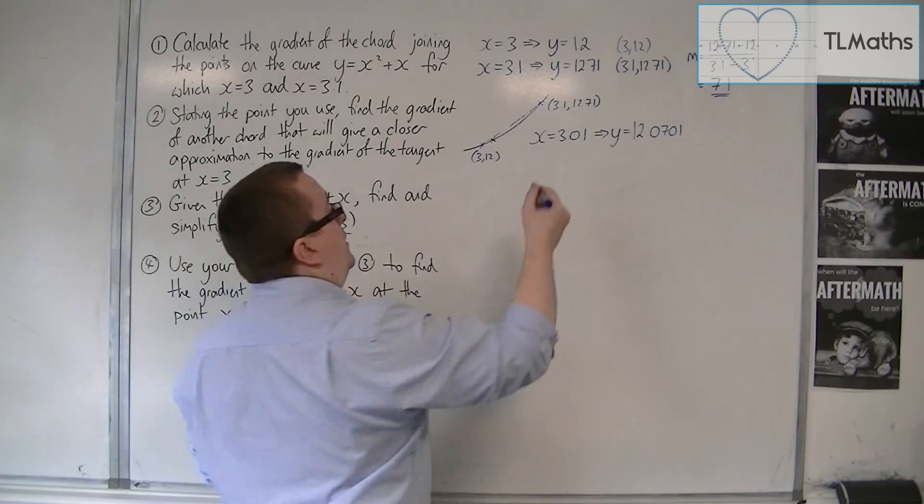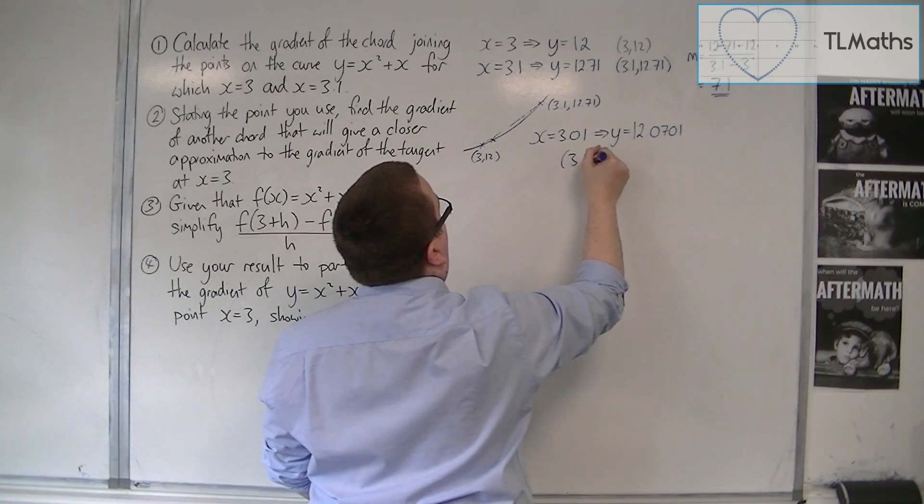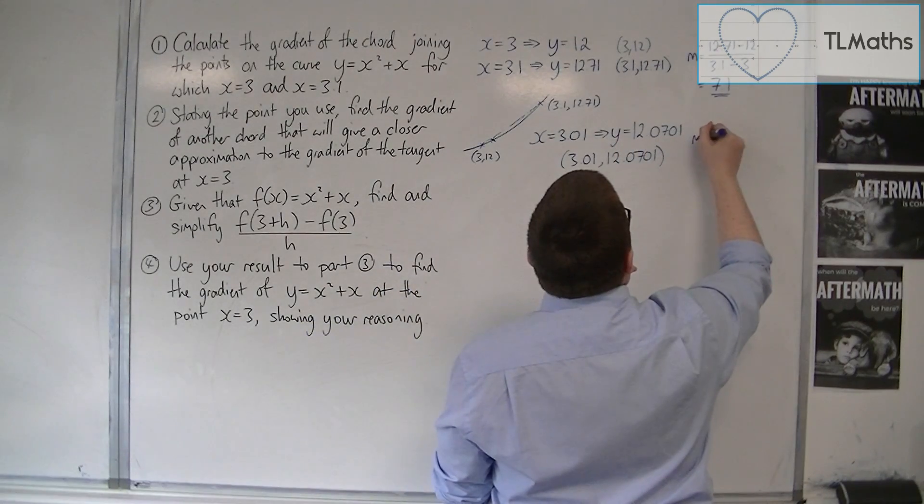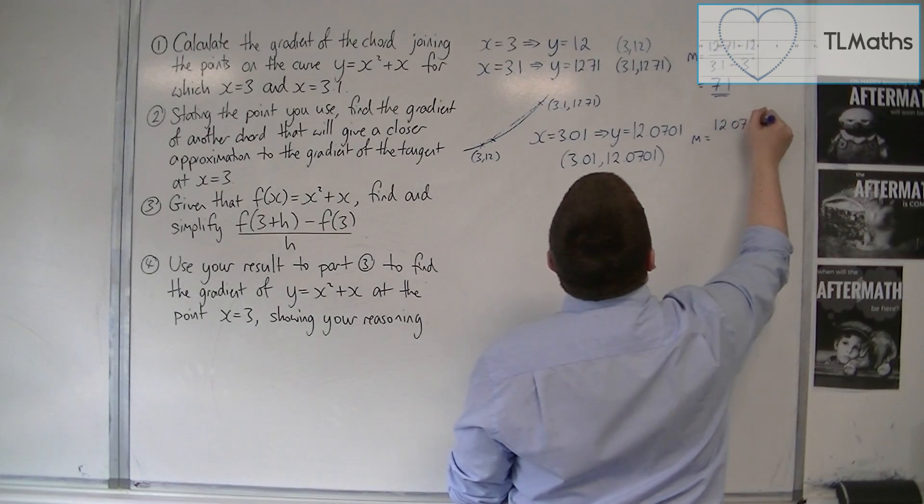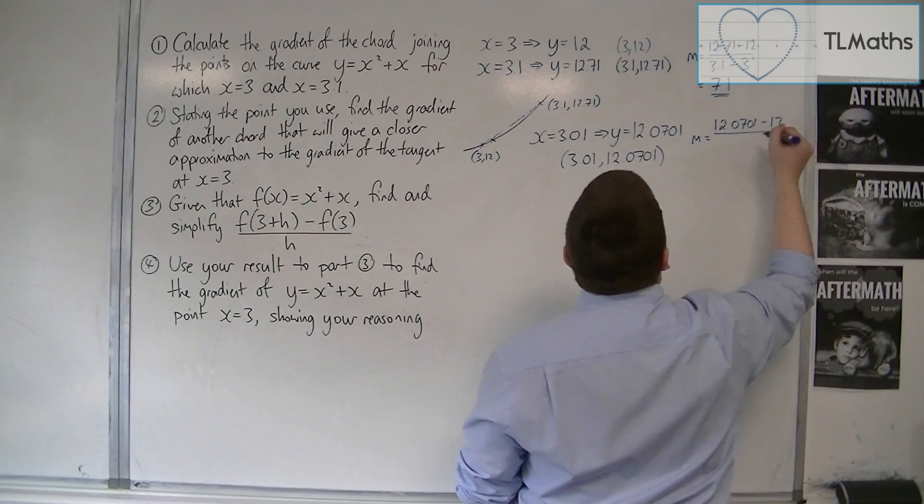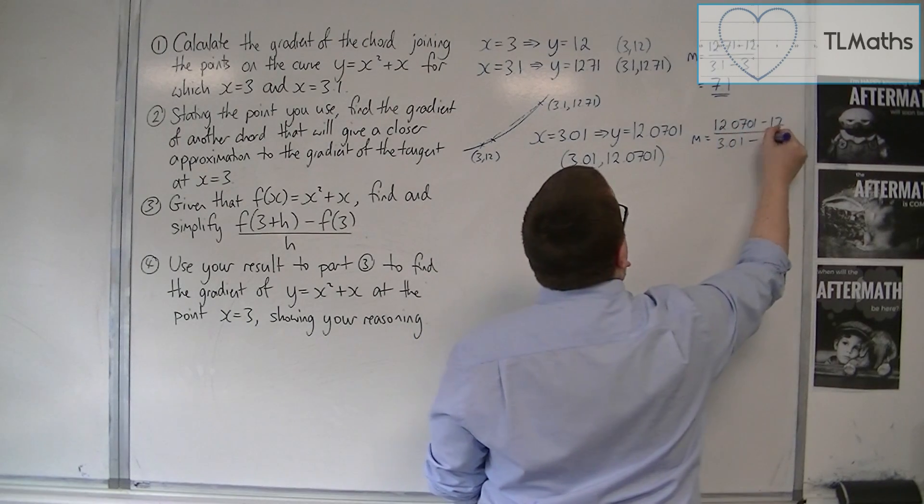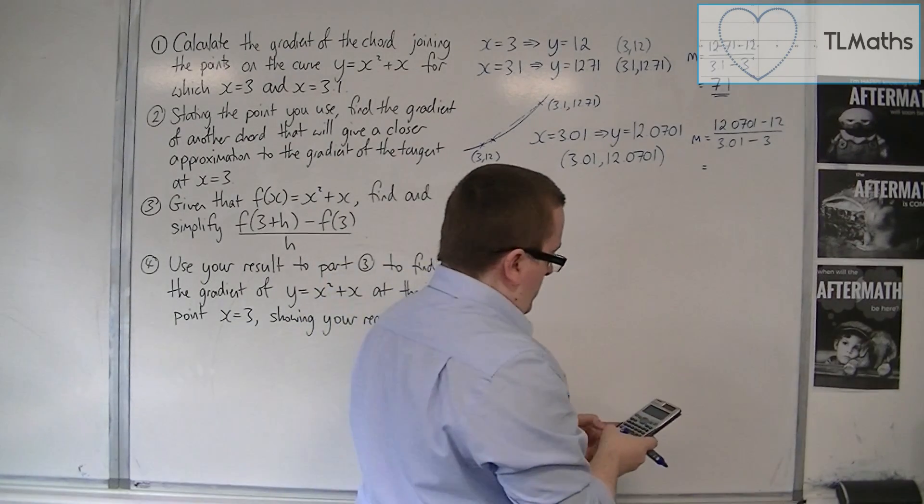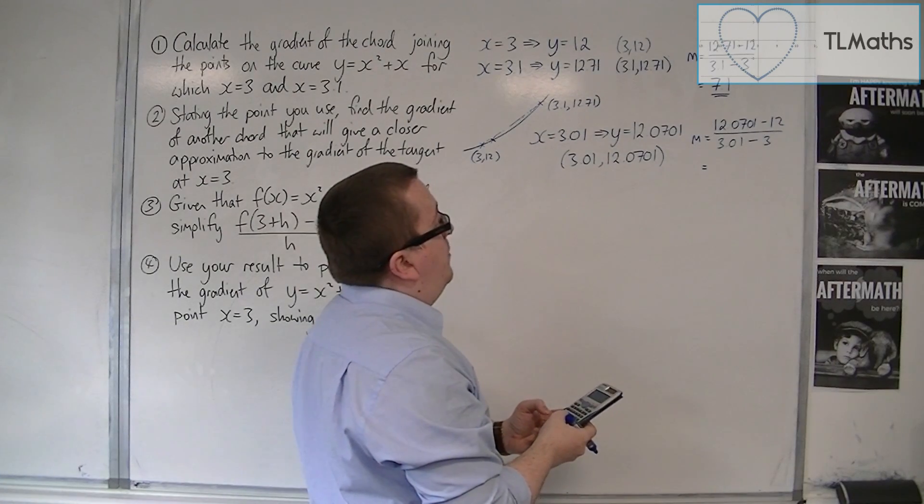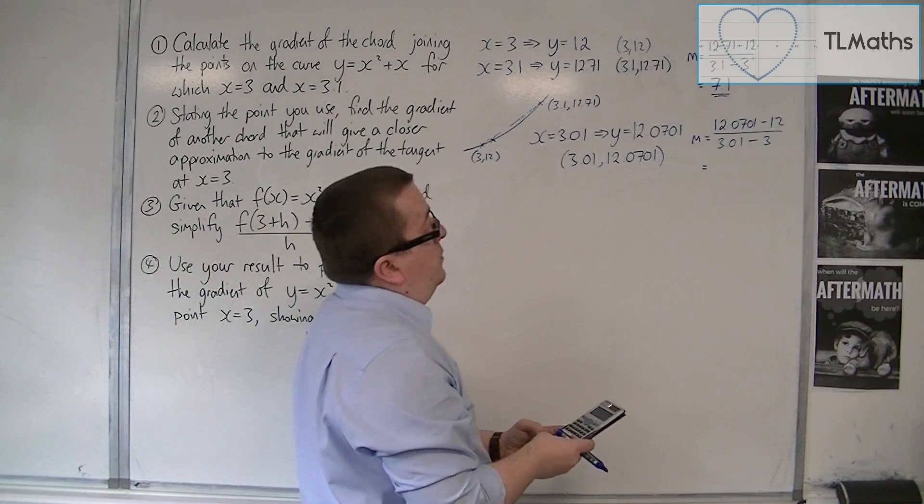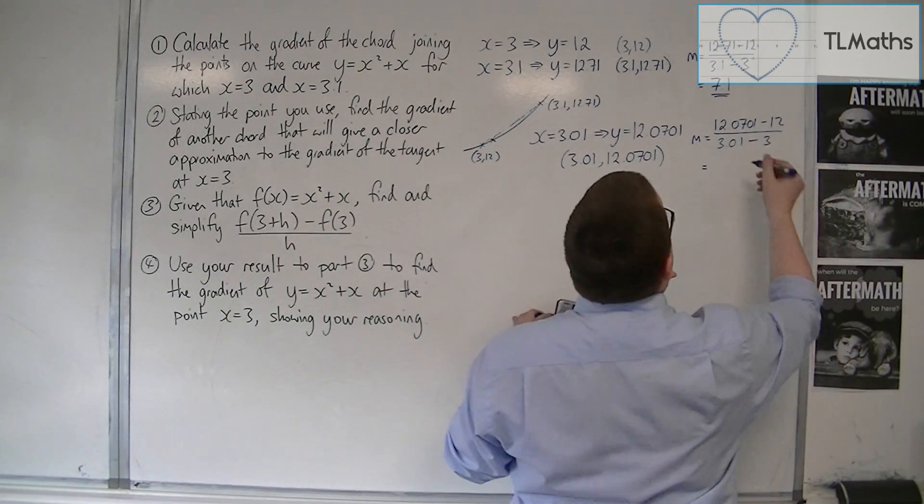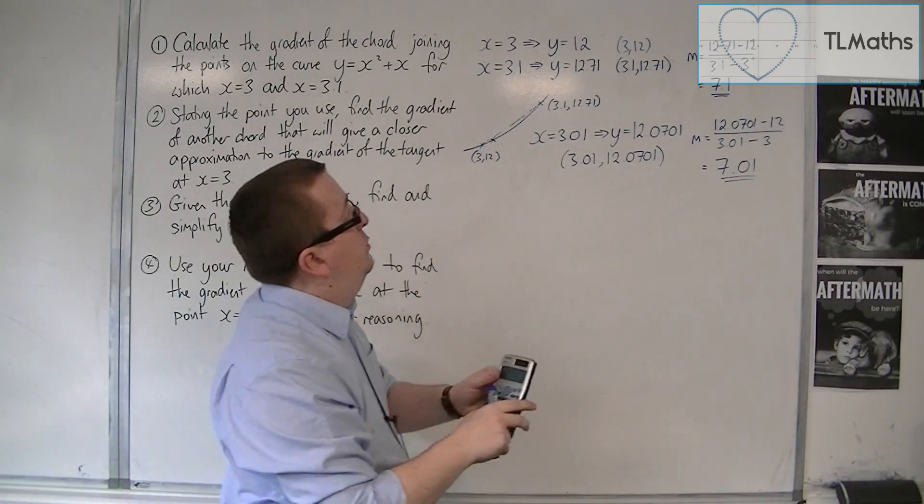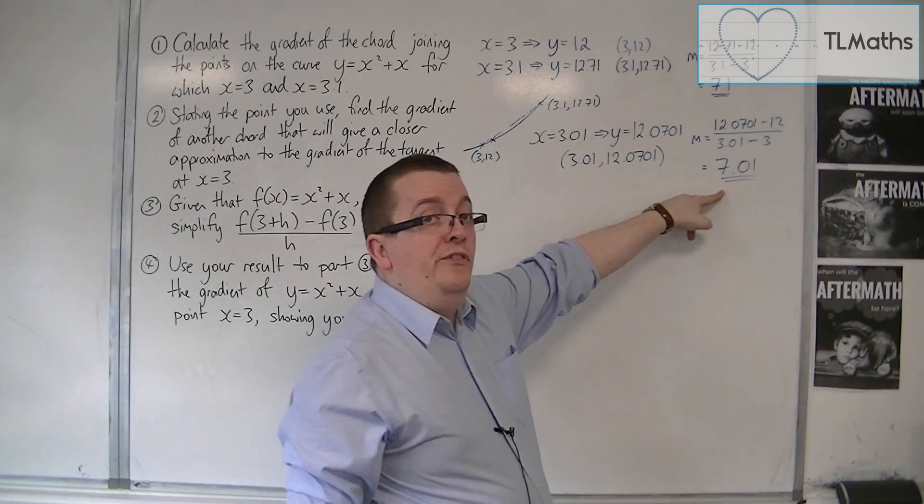And now I need to find the gradient between 3, 12 and 3.01, 12.0701. So m equals 12.0701 take away 12—difference in the y-coordinates—divided by the difference in the x-coordinates. So we're going to have 0.0701 and then divide by 3.01 take away 3. So 0.01, and we get 7.01. So the gradient of the two initial points is 7.1, the gradient of these two points is 7.01.